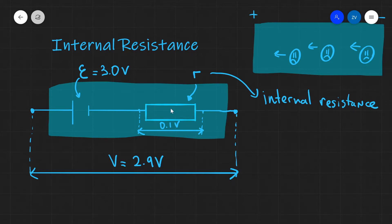If there was no internal resistance, the measured potential difference across the cell would equal the EMF. However, now it doesn't because there's a voltage drop of 0.1 volts due to the internal resistance, and the terminal PD V is now equal to 2.9 volts.